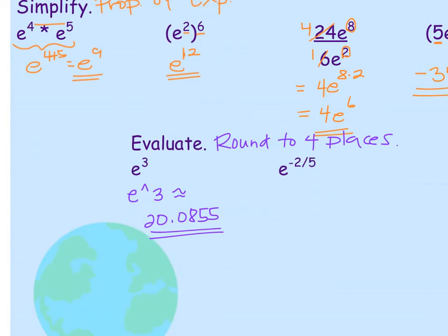e to the negative 2 over 5. This is going to be tricky because of the rational exponent. If we're just plugging this into our calculator to evaluate, make sure you put the exponent in parentheses.